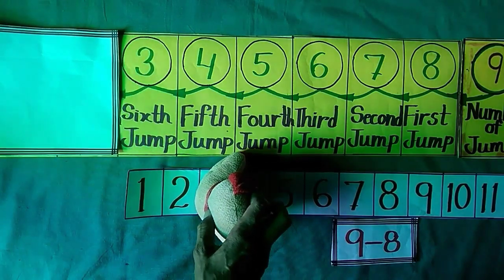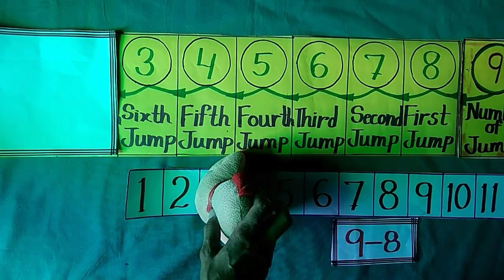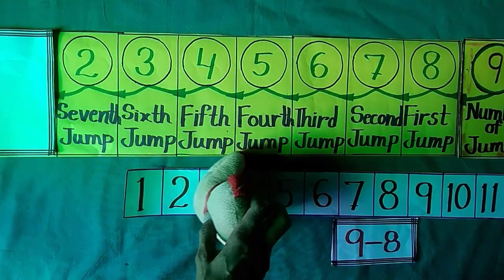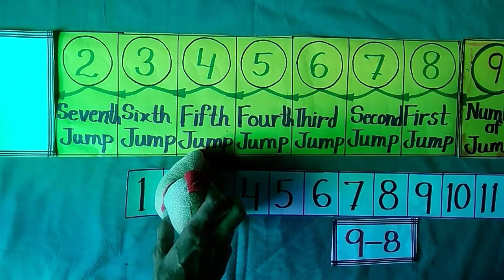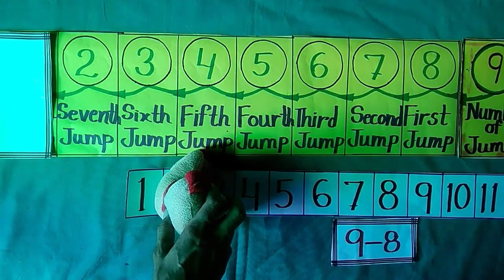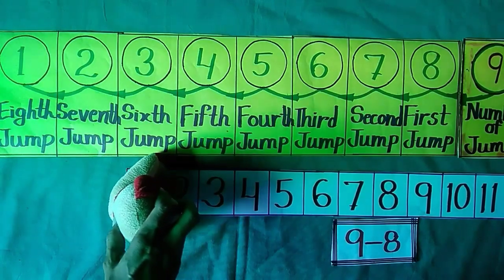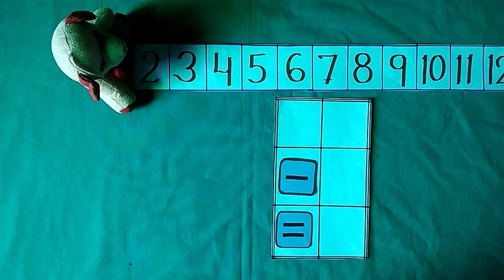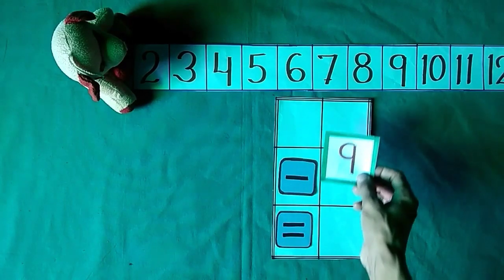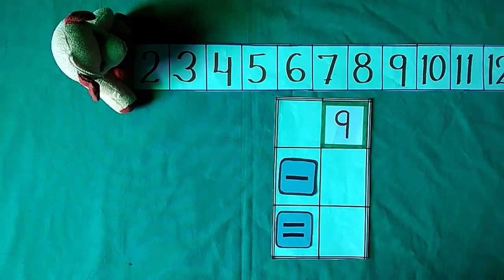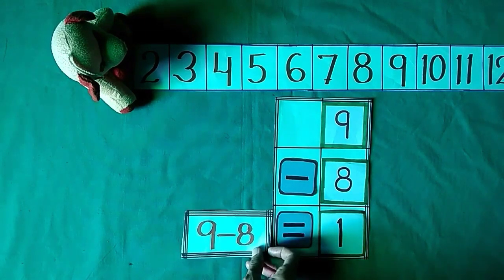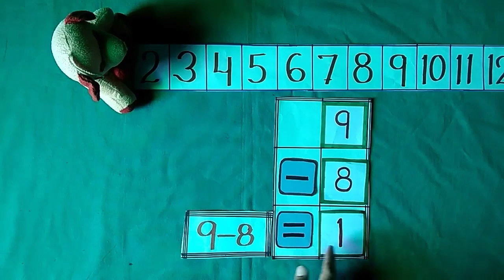When he takes his sixth jump, he reached at 3. When he takes his seventh jump, he reached at 2. And when he takes his eighth jump, he reached at 1. Jimmy stands at 9 and he takes 8 backward jumps. He reached at 1. So 9 minus 8 is equal to 1.